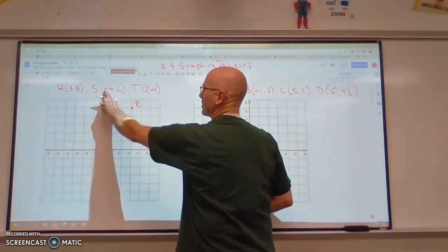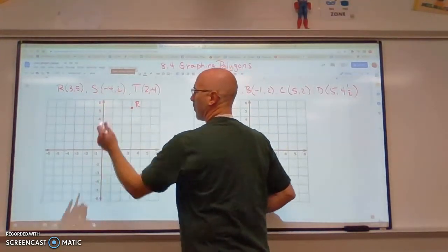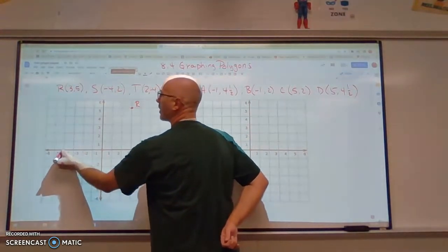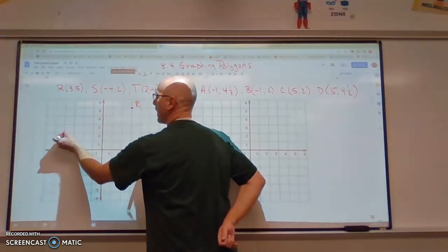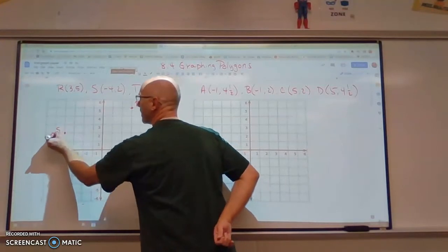Point S is going to be at the location negative 4, 2. So we go negative 4 in the x direction, positive 2 in the y direction.